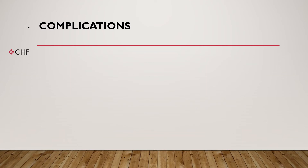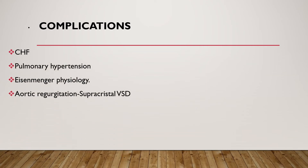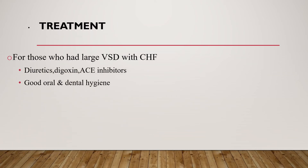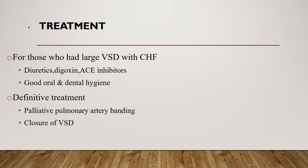Complications of VSD include heart failure, pulmonary hypertension, Eisenmenger physiology, aortic regurgitation from supracristal VSD, acquired infundibular pulmonary stenosis, and rarely infective endocarditis. Regarding treatment for those with large VSD with heart failure: diuretics, afterload-reducing agents, and good oral and dental hygiene to prevent infective endocarditis are used. For definitive treatment, palliative pulmonary artery banding or closure of the VSD should be done.